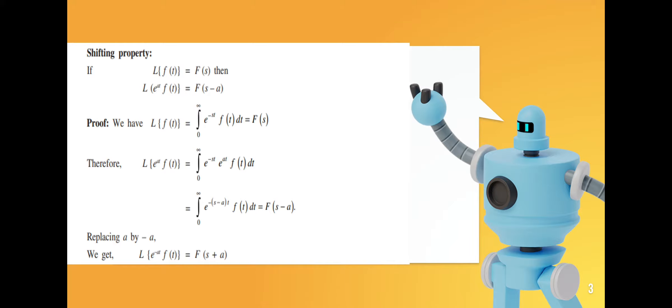The Laplace transform of f(t) equals the integral from 0 to infinity of e^(-st) f(t) dt, which is F(s). Now the Laplace transform of e^(at) f(t) equals the integral from 0 to infinity of e^(at) f(t) dt. Using the exponent rule a^m times a^n equals a^(m+n), this becomes the integral of e^(-(s-a)t) f(t) dt.